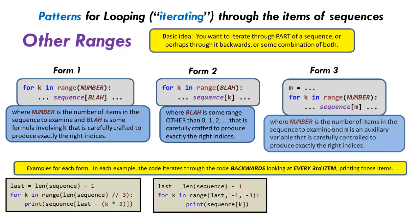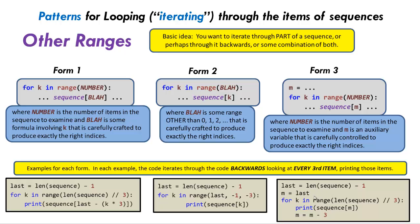Here's a third way to look at this same problem that mixes the two ideas. Again, we have k in range number for however many we want. But this time we introduce an auxiliary variable m, so we can write sequence m without the more complicated formula. We start m out at something, and then through the loop we change m as needed. Here's an example: last is length minus 1, m starts out as last, and each time through the loop m goes down by 3. So we start at sequence last the first time, then m goes down 3, and so forth. You can use whichever of these three forms works better for you when iterating through part of a sequence, going backwards, or some combination.